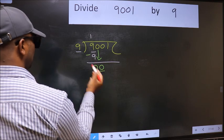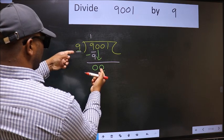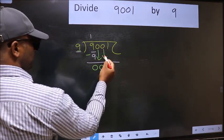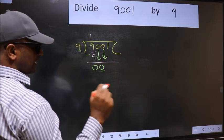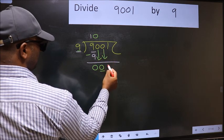Now here we have 0 and here 9. 0 is smaller than 9. So we should bring down the second number. And the rule to bring down second number is we should put 0 here. Then only we can bring this number down.